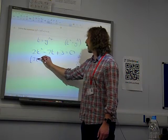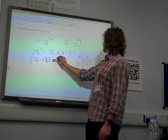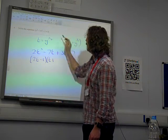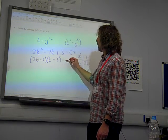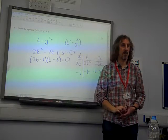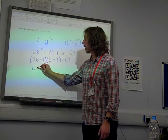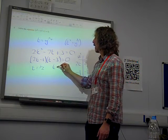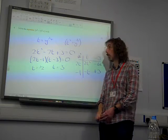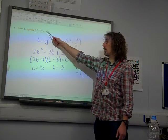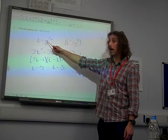So we've got 2t minus 1 and t minus 3 as our factors, giving us t as a half and t as 3. They're the two solutions. But of course, the question wasn't about t. We just introduced t to make it easier. The question was about y.